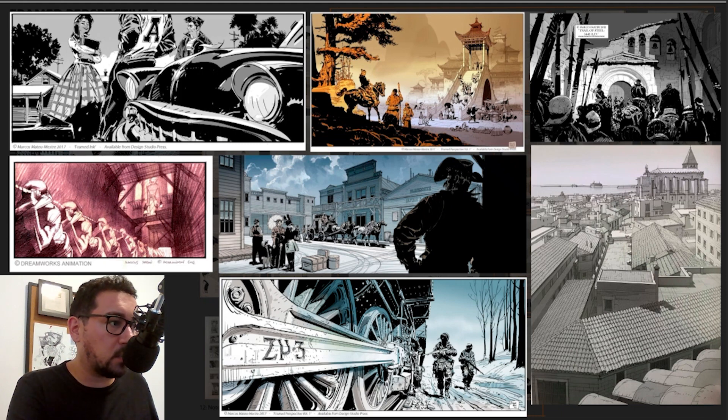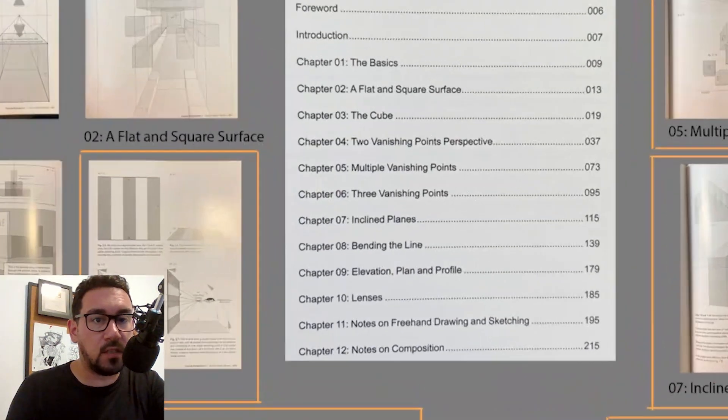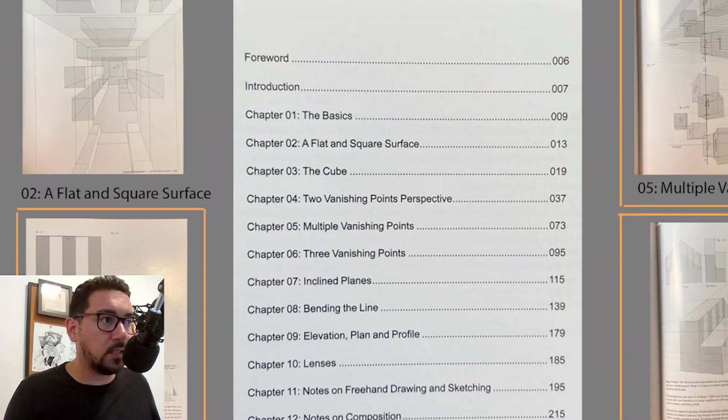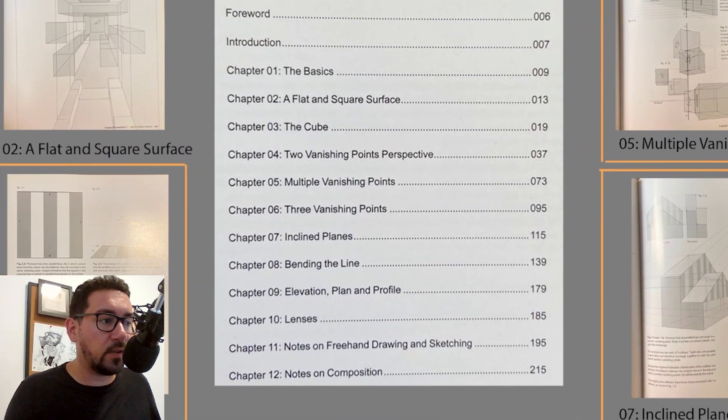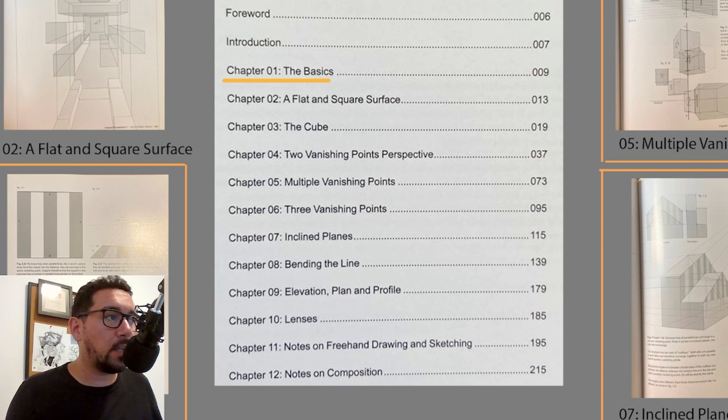But on this one, he's going to focus on perspective construction. Let's jump into the details for the contents of the book. I always like to go through them first. So basically he starts with fundamentals and concepts, like what's horizon line, what's a vanishing point and so on and so forth.